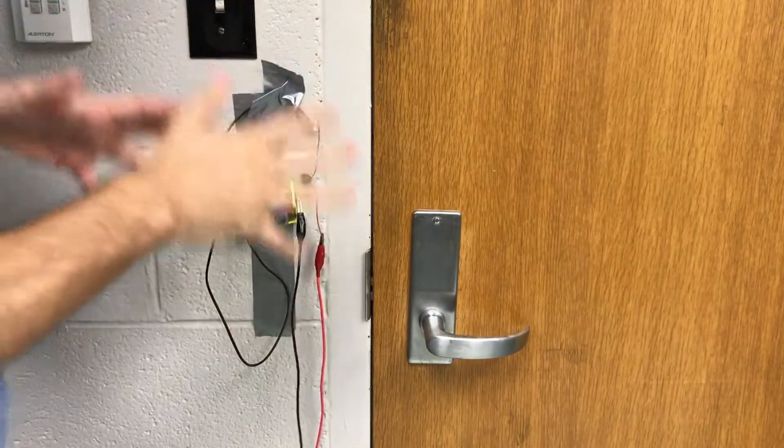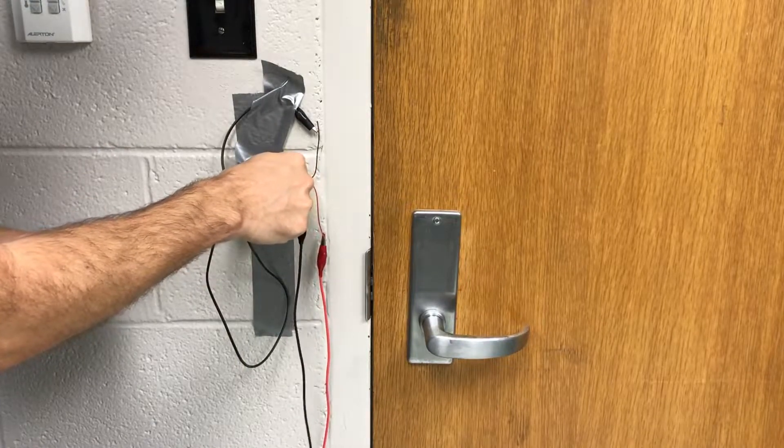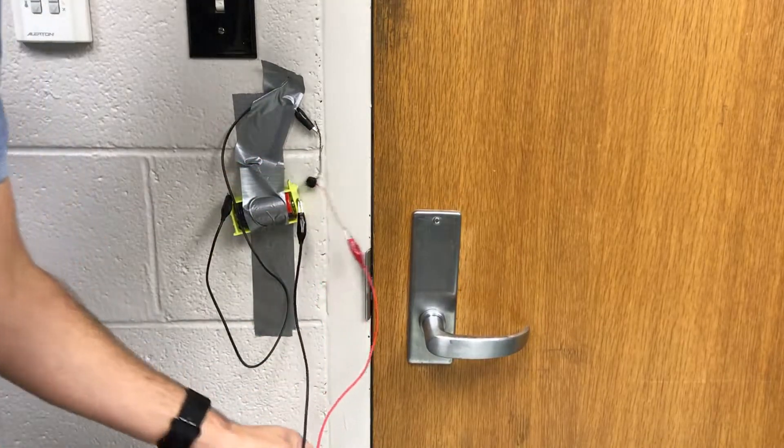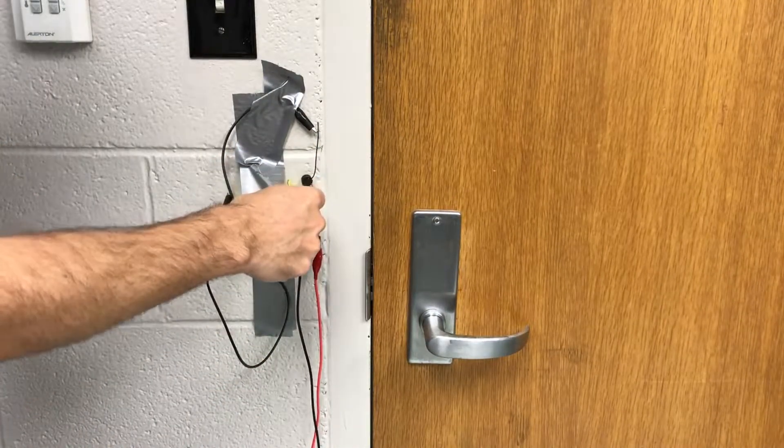I want to make a door alarm. I have here a battery, a very annoying buzzer, and some wires. One end of the buzzer goes to the positive end of the battery.